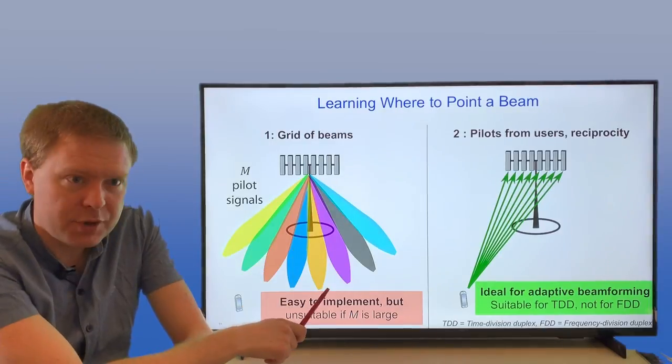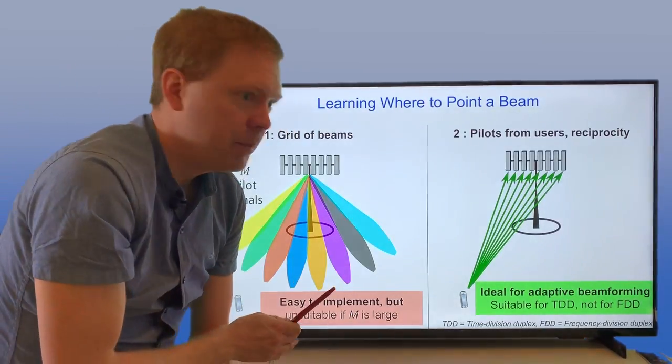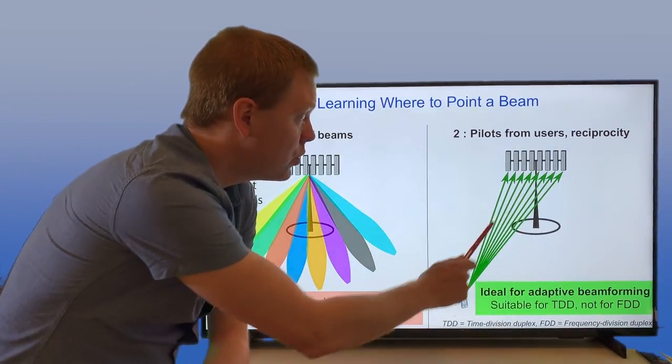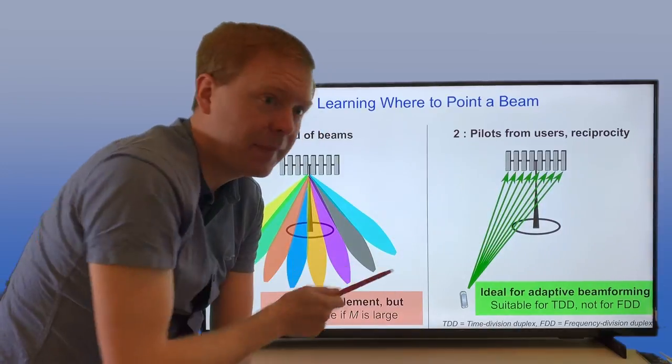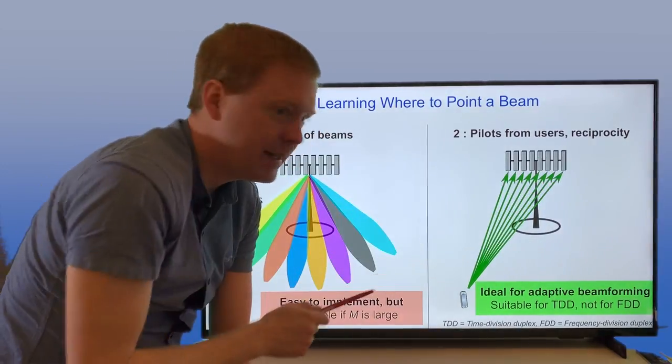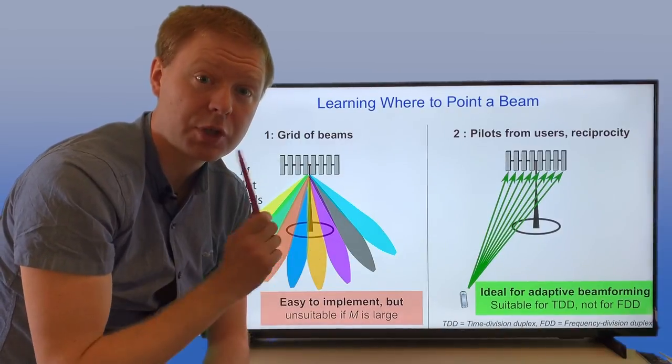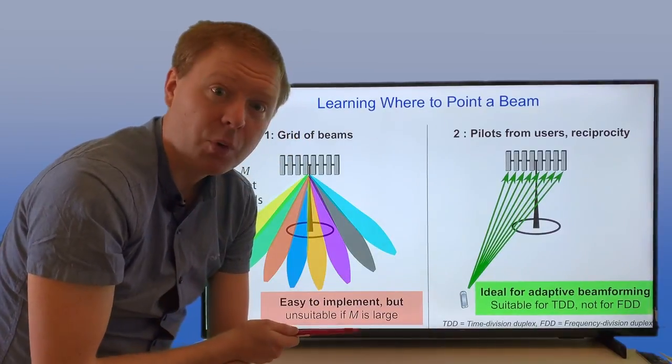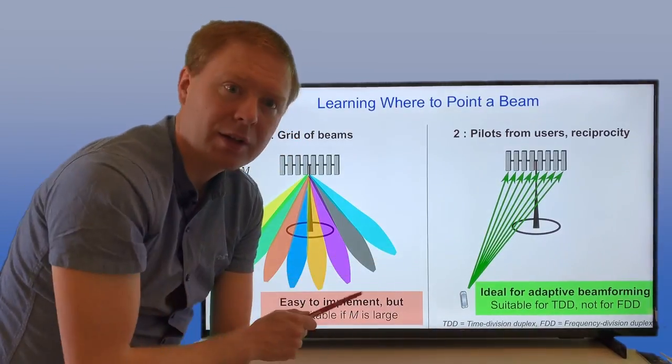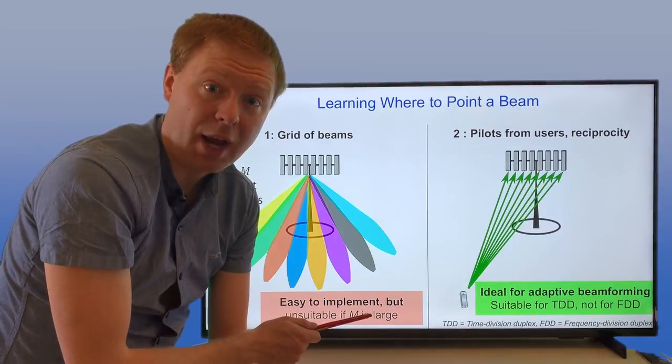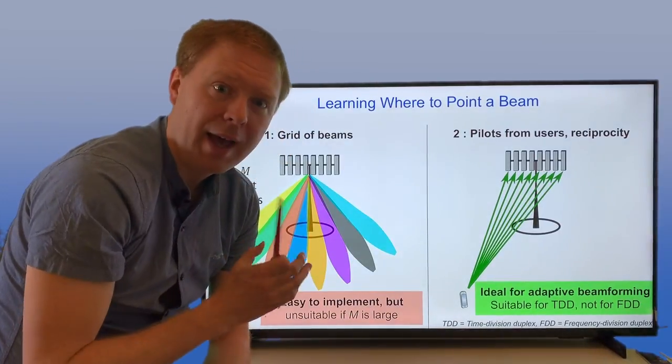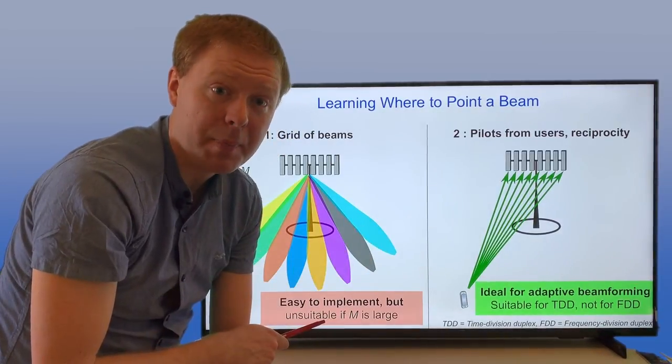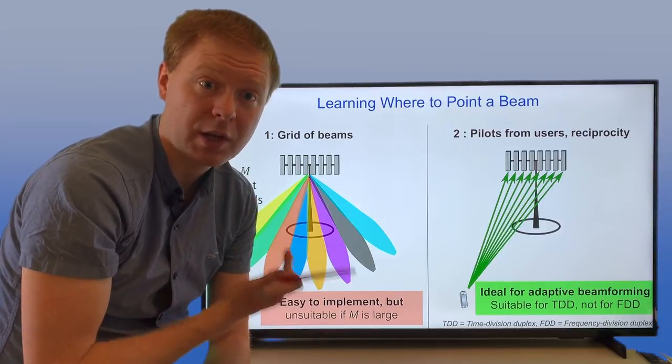The other option, which is something that we've been pushing in the Massive MIMO literature, is to utilize that the user is sending the pilot towards the base station array. Then all of the antennas at the base station can measure the channel simultaneously from just one pilot signal. This is ideal for adaptive beamforming, because then with only one pilot signal, you can measure the entire channel. You might still want to have a sequence of some length to push up the SNR, but this is much better in terms of implementing systems with a large number of antennas.